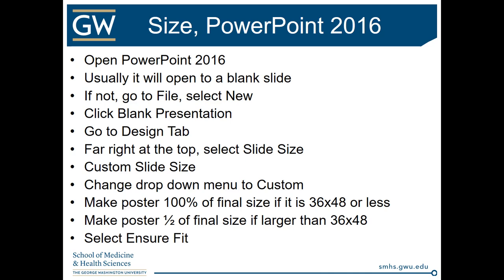There's a drop-down menu where you can change to Custom. Once you do that, you'll see a box that allows you to fill in the size of your poster. If your poster is going to be 36 by 48 or smaller, you can make it exactly the size — 100% of its final size. But PowerPoint only lets you make posters up to a certain size, so if it's going to be larger than 36 by 48, make it half the final size and tell the printer you want it printed at 200%. So for example, make it 18 by 24 and tell the printer to print at 200% and it will come out to 36 by 48.